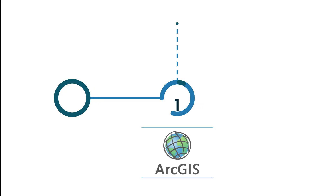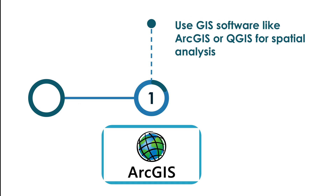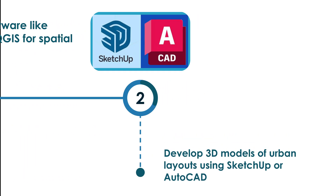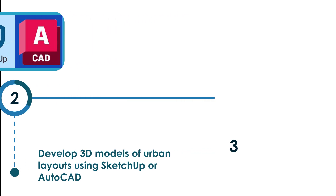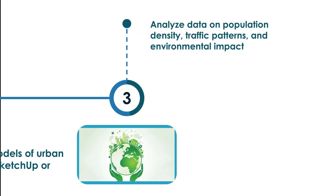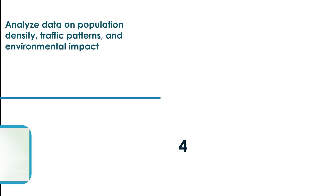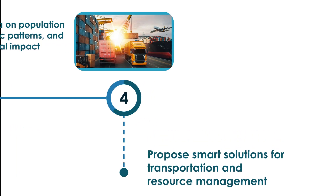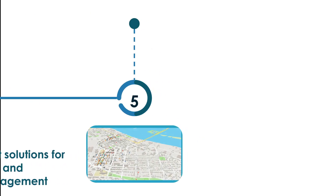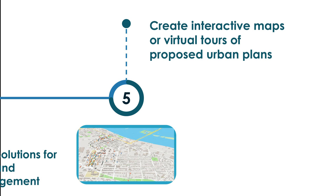For prototype development, use GIS software like ArcGIS or QGIS for spatial analysis. Develop 3D models of urban layouts using SketchUp or AutoCAD. Analyze data on population density, traffic patterns, and environmental impact. Propose smart solutions for transportation and resource management, and create interactive maps or virtual tours of proposed urban plans.